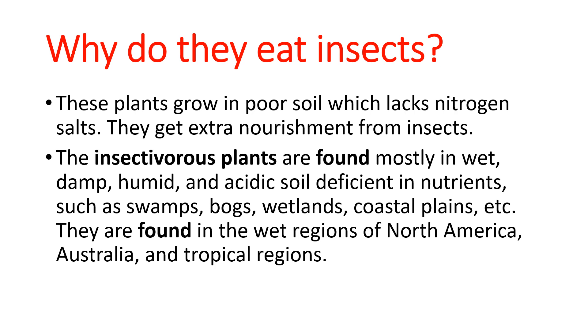The insectivorous plants are found mostly in wet, damp, humid, and acidic soil which is deficient in nutrients — like marshy areas, bogs, wetlands, and coastal plains. They are found in the wet regions of North America, Australia, and tropical regions.